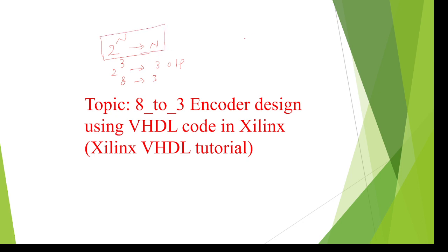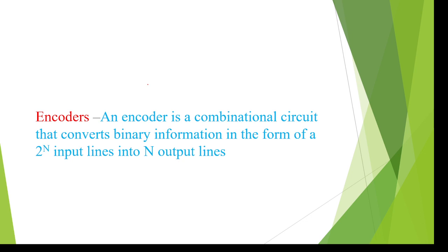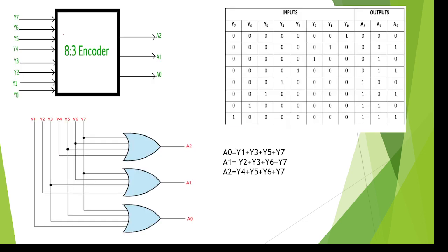Basically, an encoder is a combinational circuit. For example, '10101110' is converted into another encoded form — we are encoding one form to another form. This is an encoded message and the original is the original message. That is the meaning of encoding. Coming to the 8-to-3 encoder, we can see this.